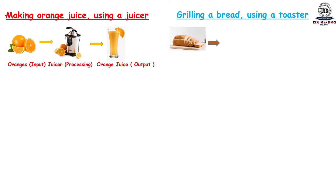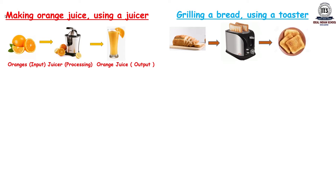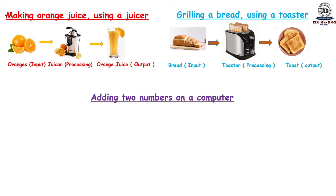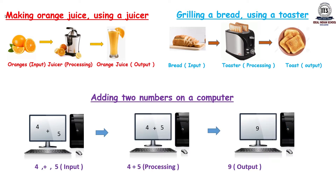Next example: grilling bread using a toaster. You need bread, then a toaster, and then your toasts are ready. So here: bread is the input, the toaster is the processing, and toast is the output.